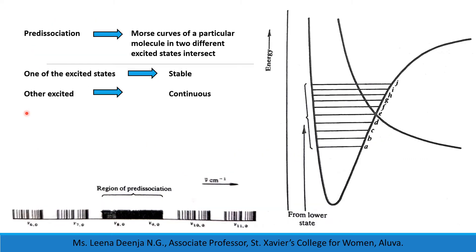Predissociation can arise when the Morse curves of a particular molecule in two different excited states intersect. One such possibility is shown here. One of the excited states is stable since there is a minimum for this state, and the other is continuous. The vibrational levels are marked as A, B, C, etc.